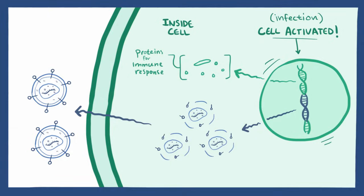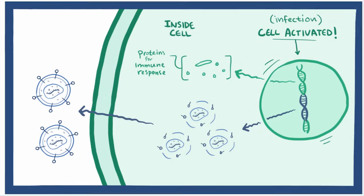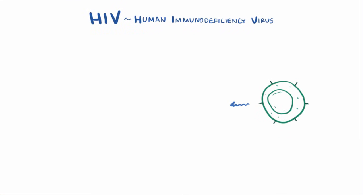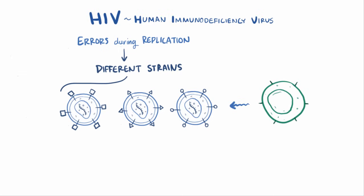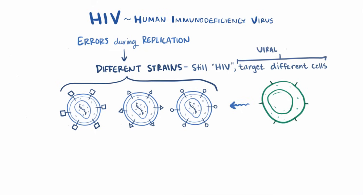HIV is notorious for making errors when it replicates, and during infection it can mutate to create slightly different strains of viruses. These viruses are all still considered HIV, but they behave slightly differently from each other and target different cells in the host. That host cell preference is called viral tropism.